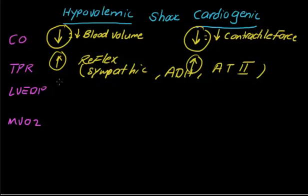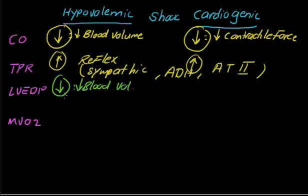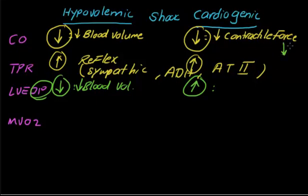Regarding left ventricular end-diastolic pressure: in hypovolemic shock, because you have a decrease in blood volume, the pressure in the heart will also decrease. You don't have enough blood, so the pressure in the heart at the end of diastole — the end-diastolic pressure — will be decreased. In cardiogenic shock, however, left ventricular end-diastolic pressure is increased.